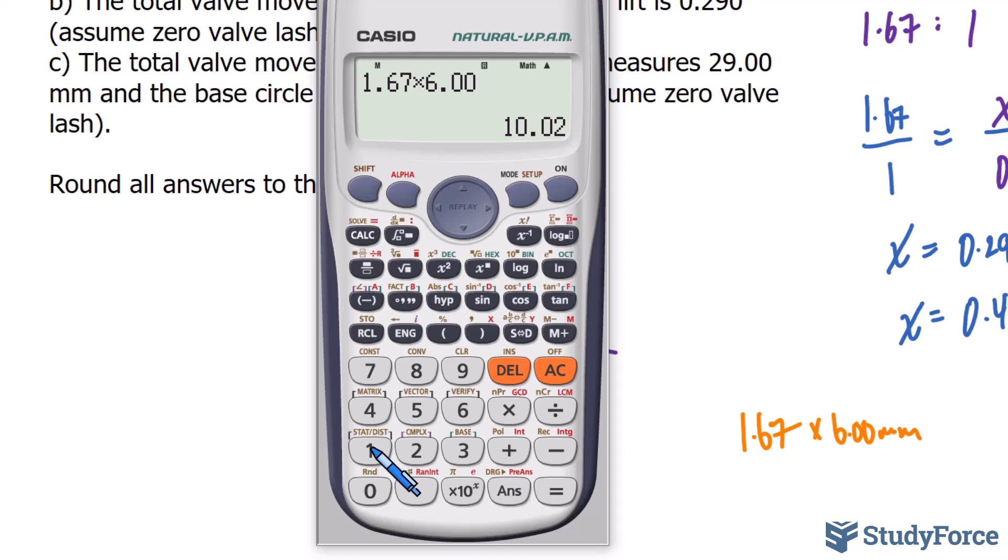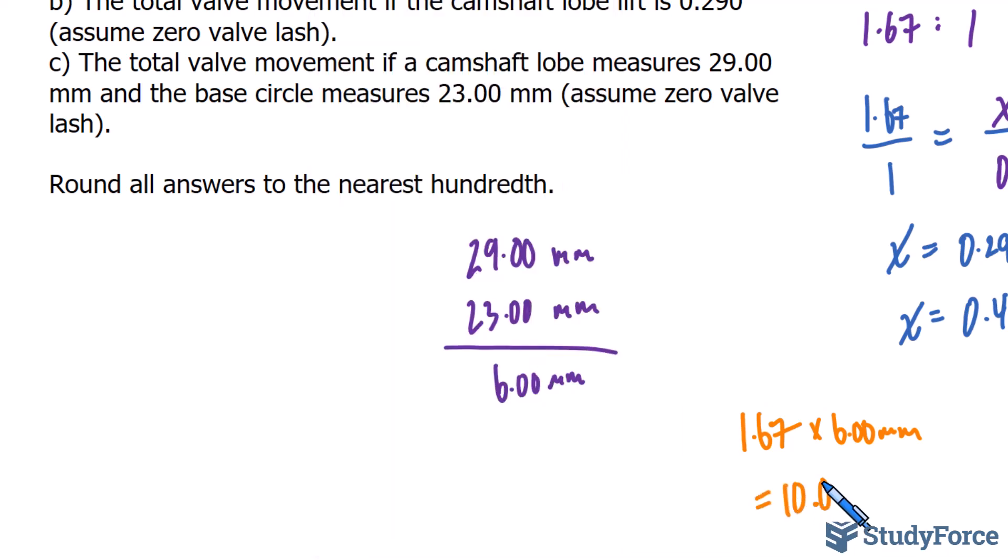So taking those two values, 1.67 times 6.00, we end up with a value of 10.02, which is already to two decimal places.